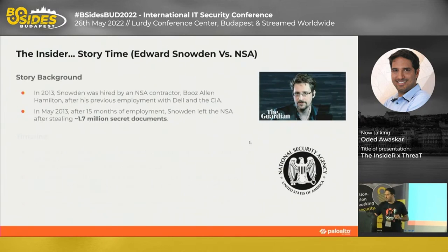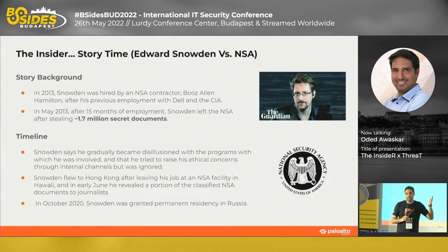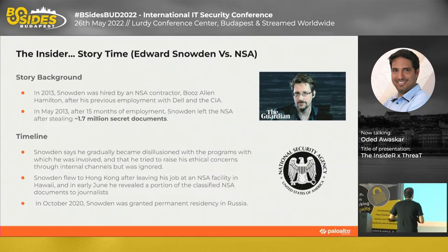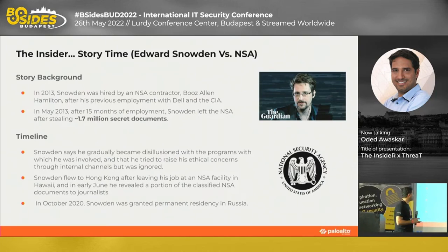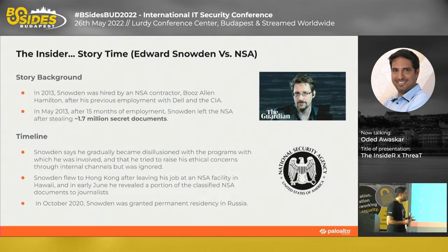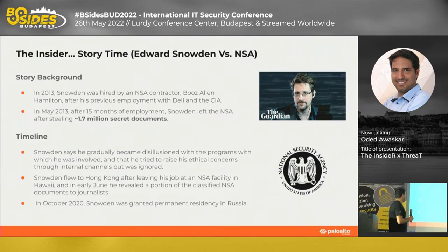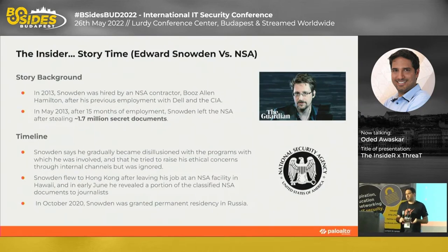I'm pretty sure that everyone here probably recognizes the person in this picture on the left. This is Edward Snowden — the famous case of Edward Snowden versus the NSA. The story begins in 2013 when Edward Snowden is hired by the NSA as an external contractor. Throughout his service, after 15 months of employment, he decides to steal data — approximately 1.7 million top secret documents were alleged to be leaked. He had domain admin credentials and connected an external USB drive to one of the servers.